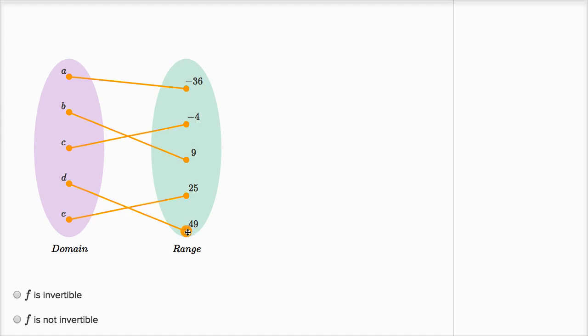So if we input 49 into our inverse function, it should give you D. Input 25, it should give you E. Input nine, it gives you B. You input negative four, input C. You input negative 36, it gives you A. So you could easily construct an inverse function here.